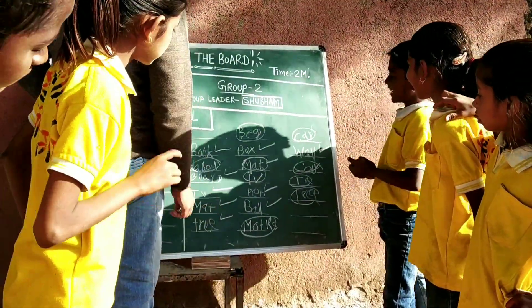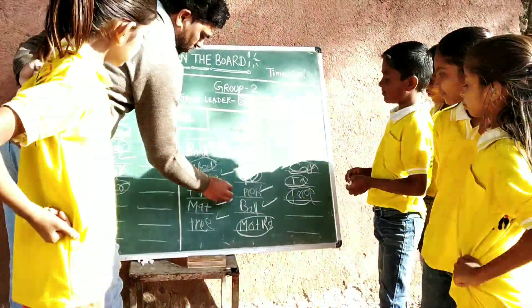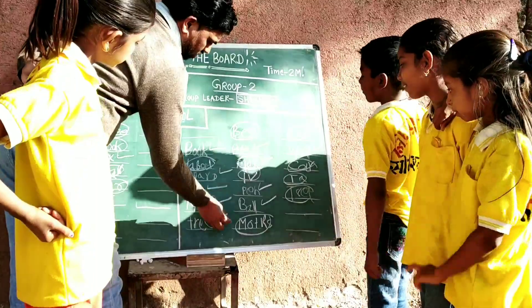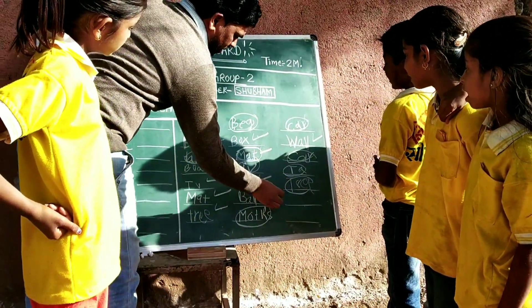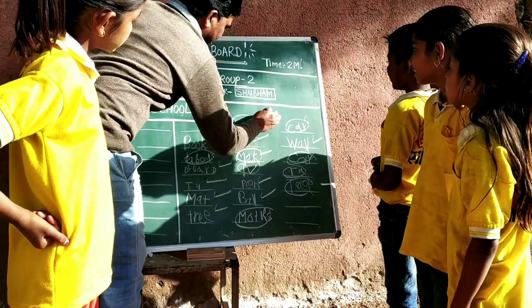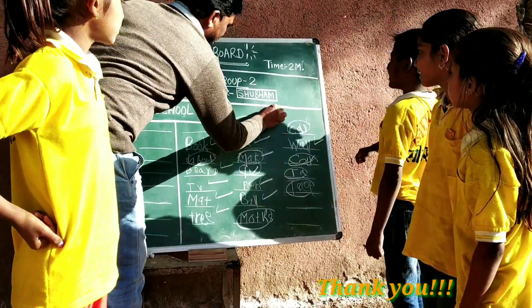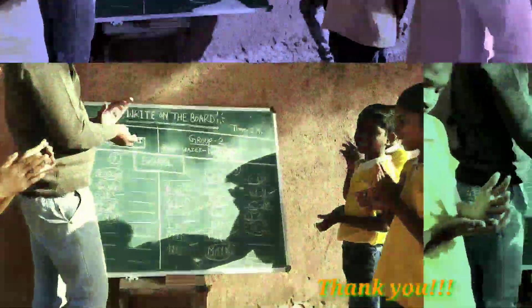Now we count the correct words: 1, 2, 3, 4, 5, 6, 7, 8, 9. Shubham's group gets 9! So let's celebrate Shubham's group — they win!